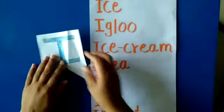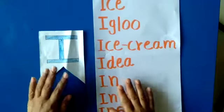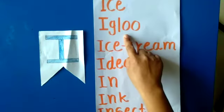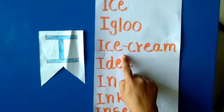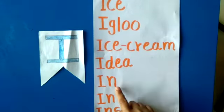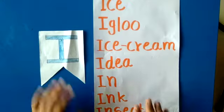That's Pramani. Alphabet I — words starting with the letter I: Ice, Igloo, Ice Cream, Idea, In, Ink, Insect.